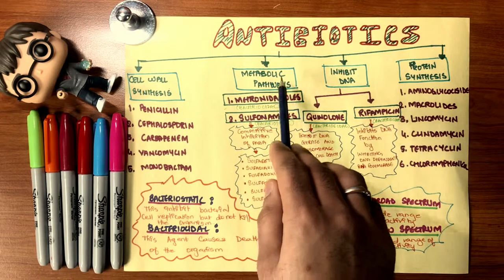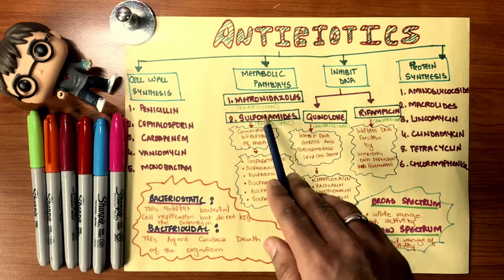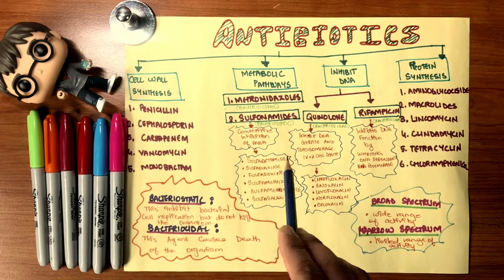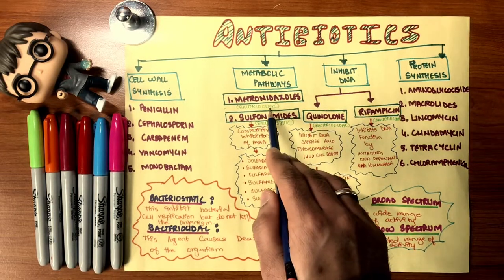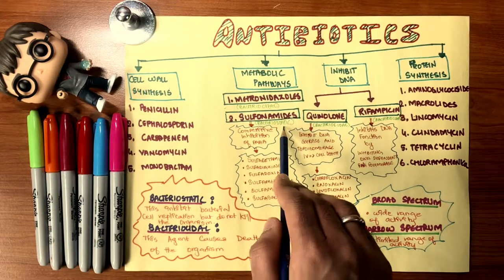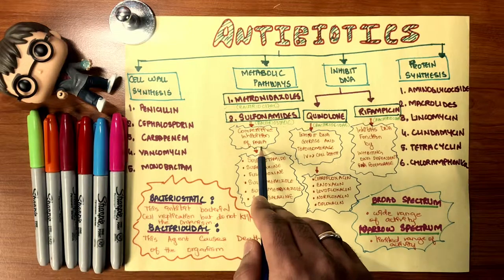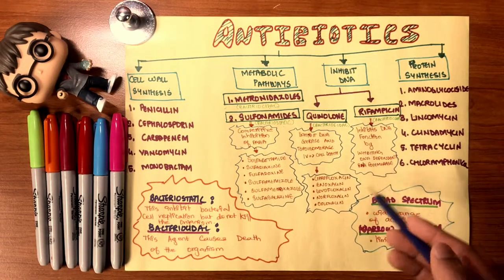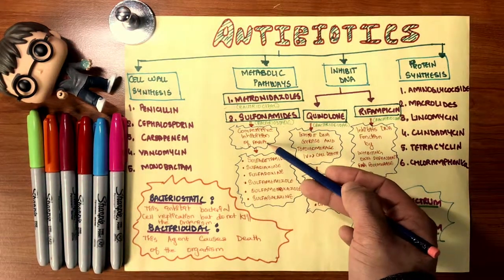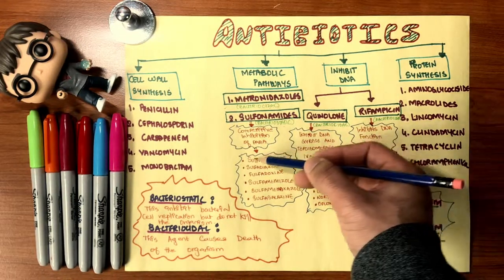Last but not least, let's take a look at the metabolic pathways and inhibition of the DNA. Metabolic pathways are further divided into metronidazole and sulfonamides, where metronidazole is bacteriocidal—it stops the metabolic pathways and it kills the bacteria at an instant. Sulfonamides are bacteriostatic; they have a competitive inhibition of the PABA, para-aminobenzoic acids, which are used to produce folic acids, and then its own metabolism is carried on. They include all the sulfas.